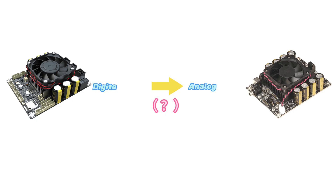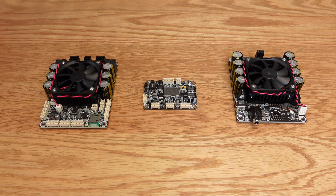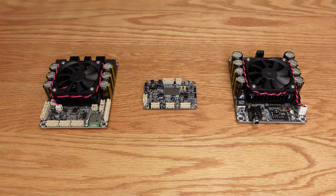Since this single-channel high-power amplifier board only supports analog input, we need to use a digital signal conversion board to convert the I2S signal output from JAB5 into an analog signal. Here, we employ the PCM5122 I2S-to-analog signal conversion board for this purpose.